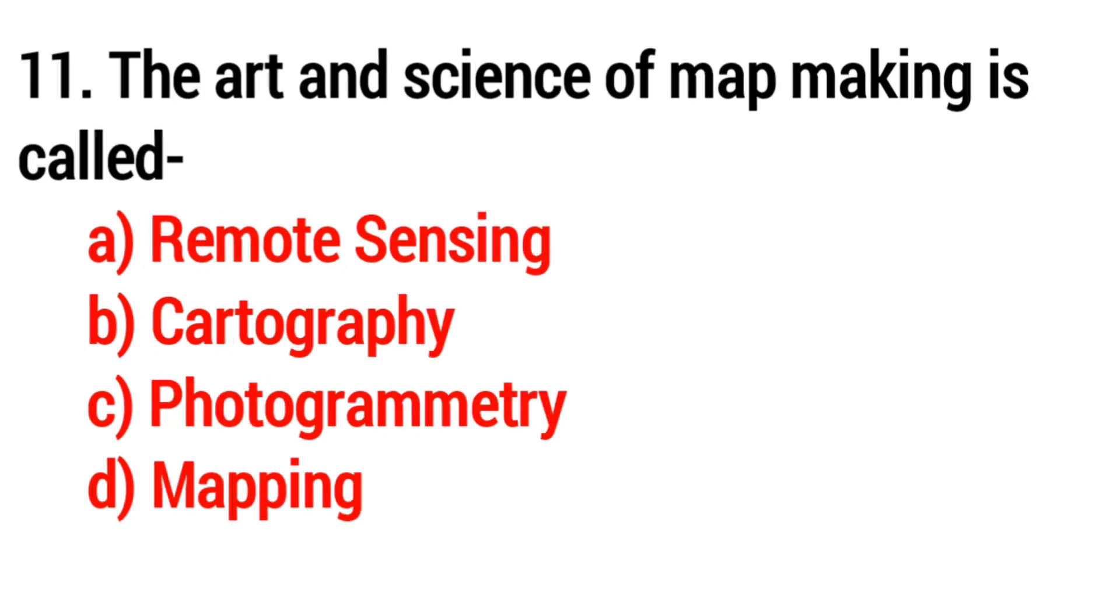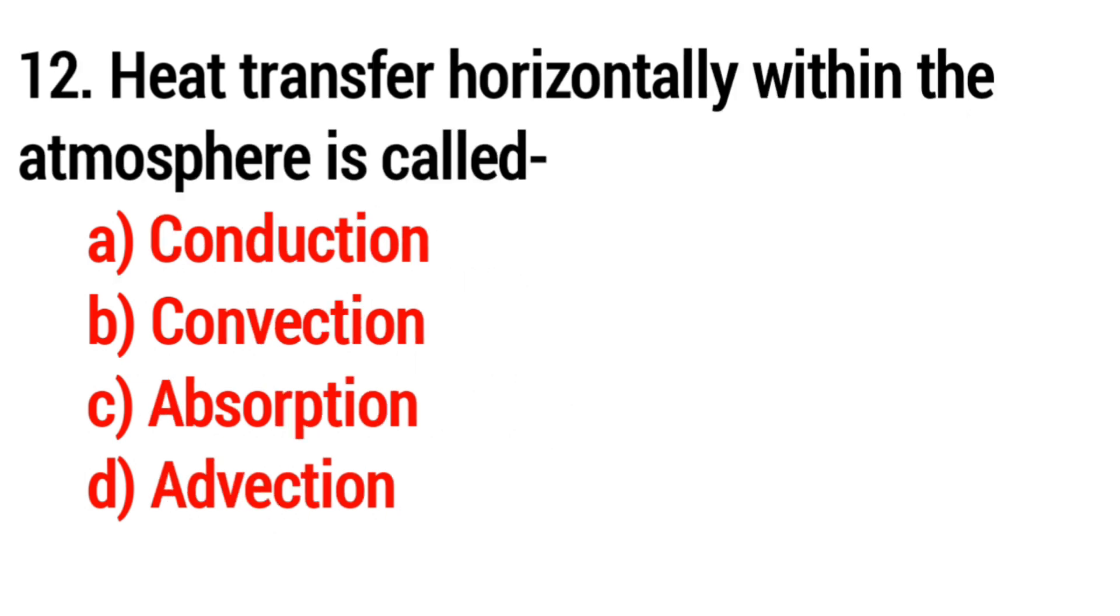Question 11: The art and science of map making is called? Answer: Option B: cartography. Question 12: Heat transfer horizontally within the atmosphere is called? The answer is Option D: advection.